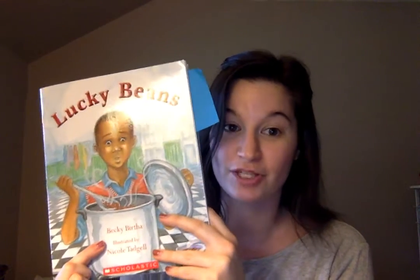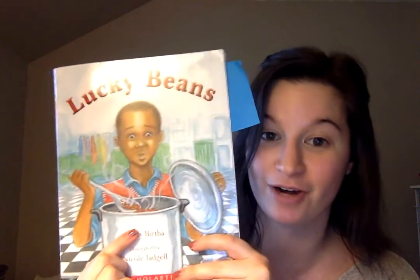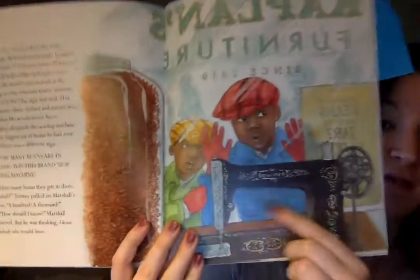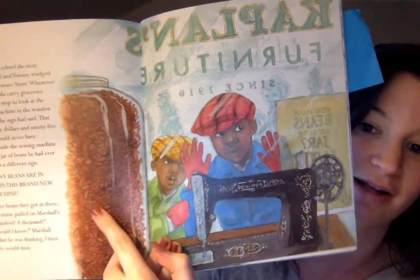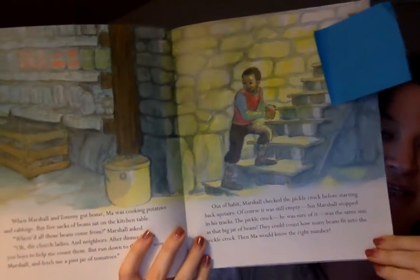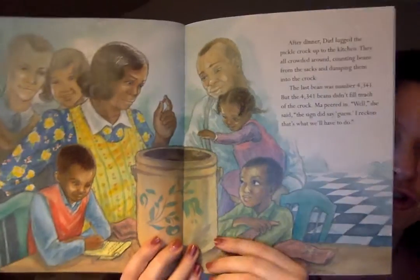Now that we've reviewed Lucky Beans, I'm going to follow our steps to figure out how Marshall changed throughout the text. Step one: what does the character want? Marshall wants to win the sewing machine for his mother — he wants to win the contest by guessing the correct number of beans in the jar. Step two: what does the character do? Marshall does a lot of research, looking at different jars in his mother's basement and working with his mother to guess the correct amount, and he's able to successfully do that.